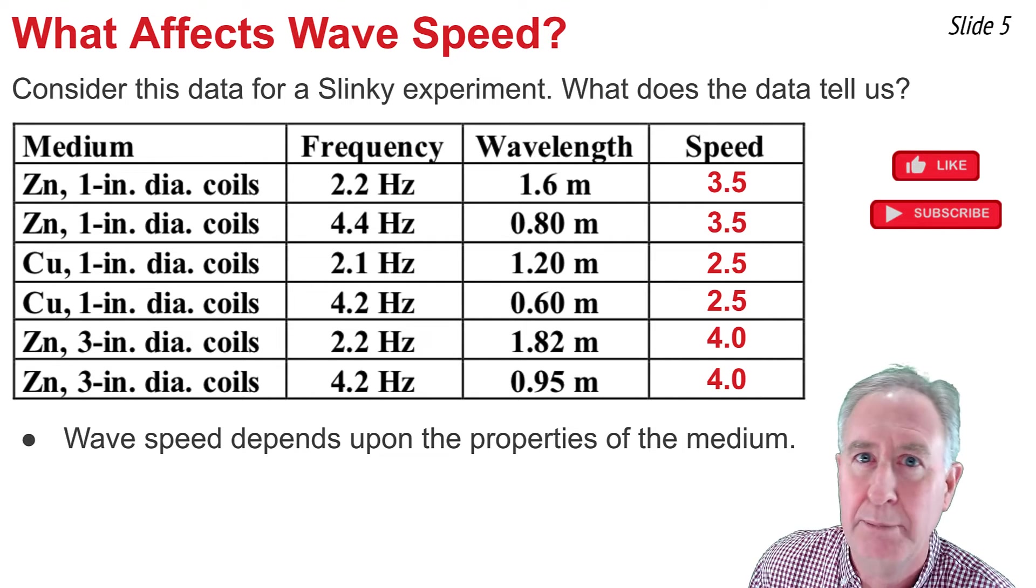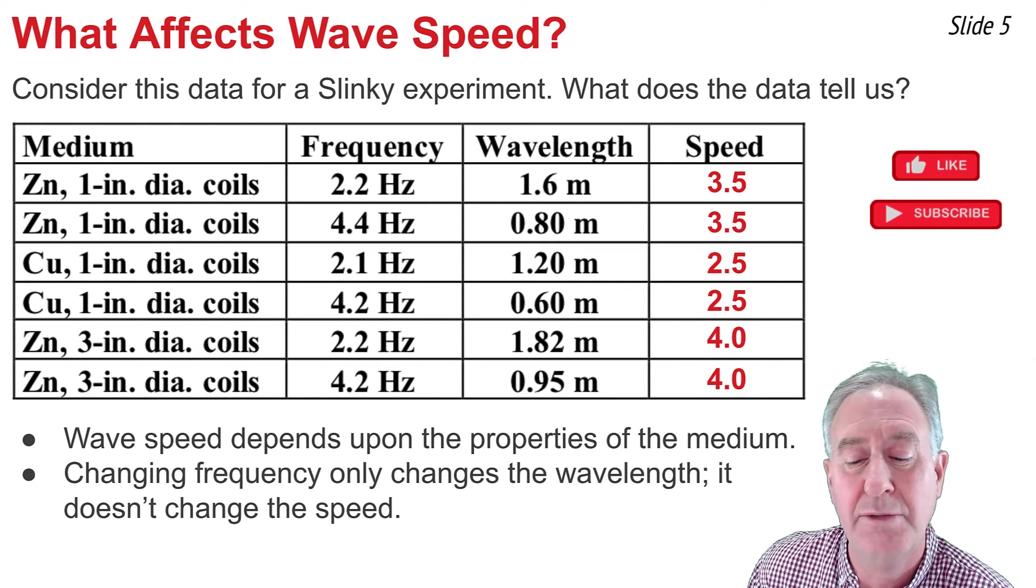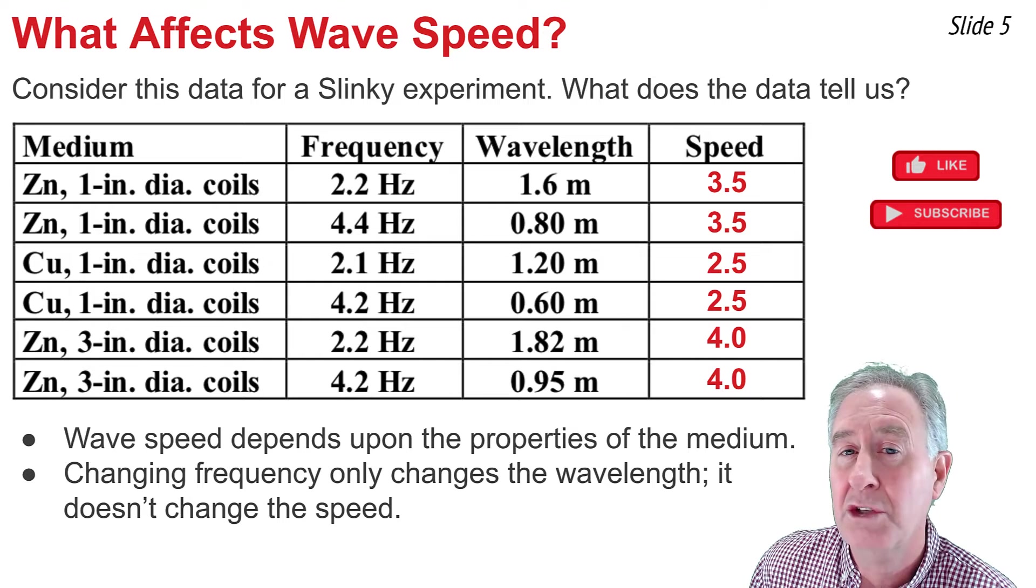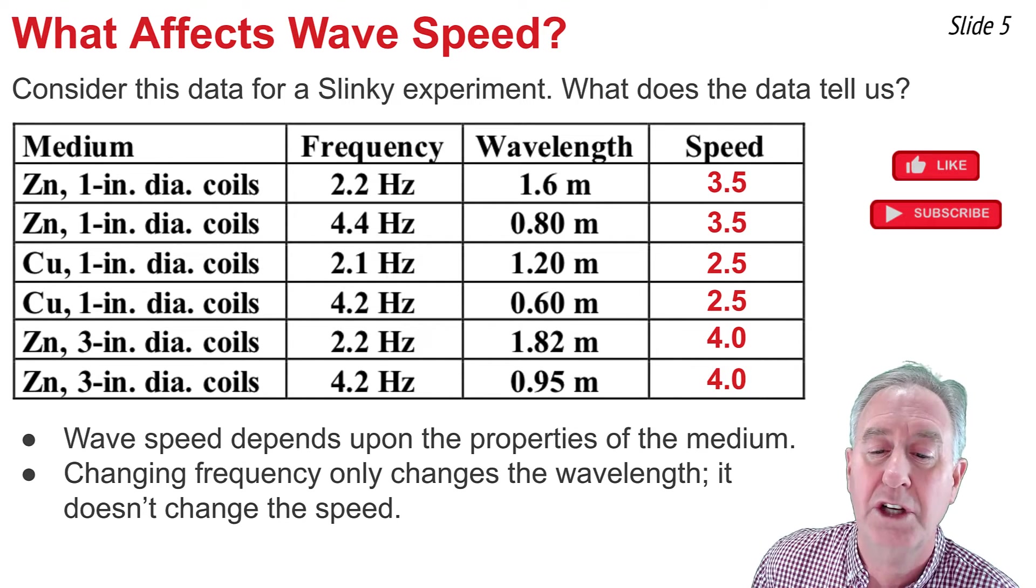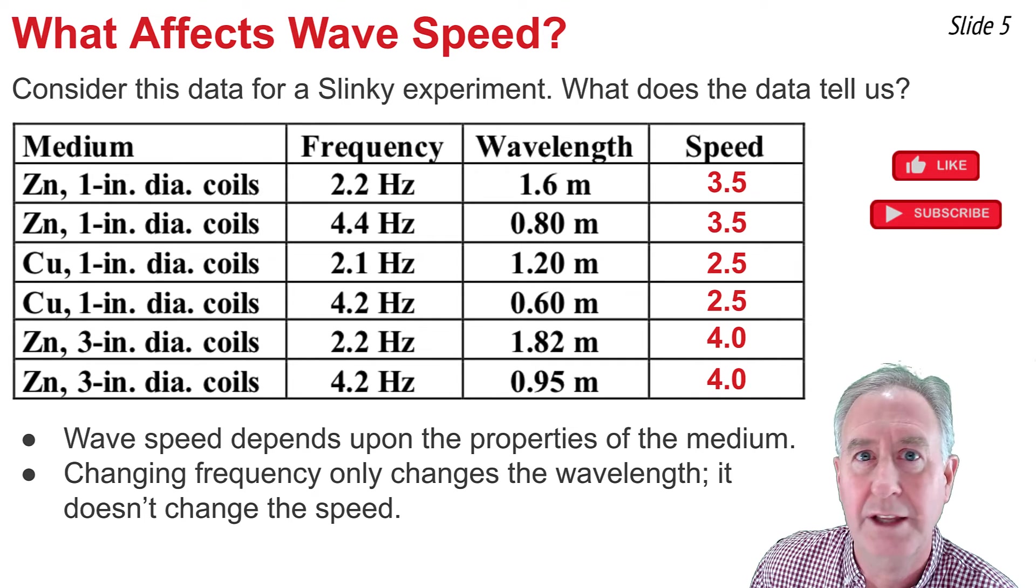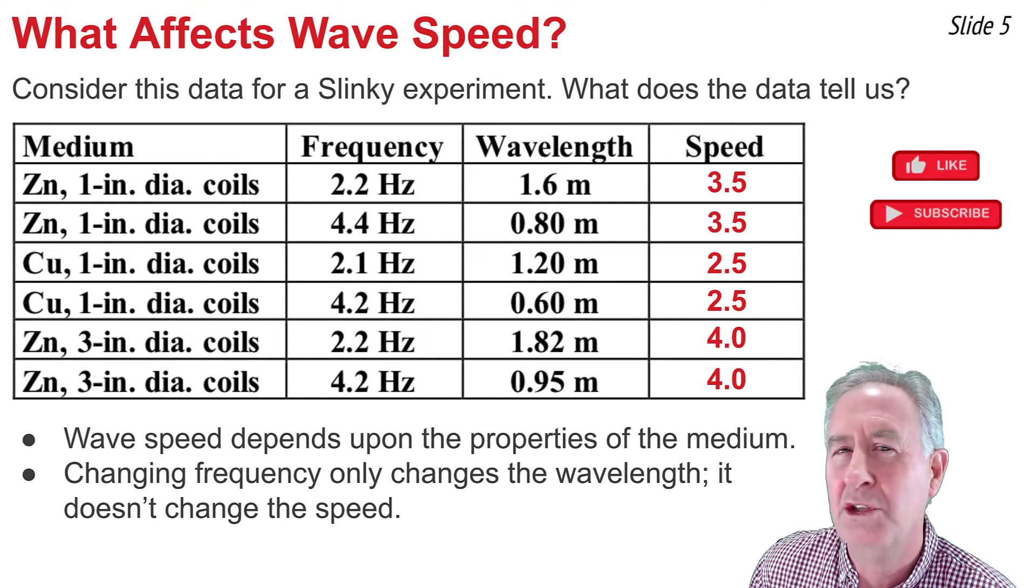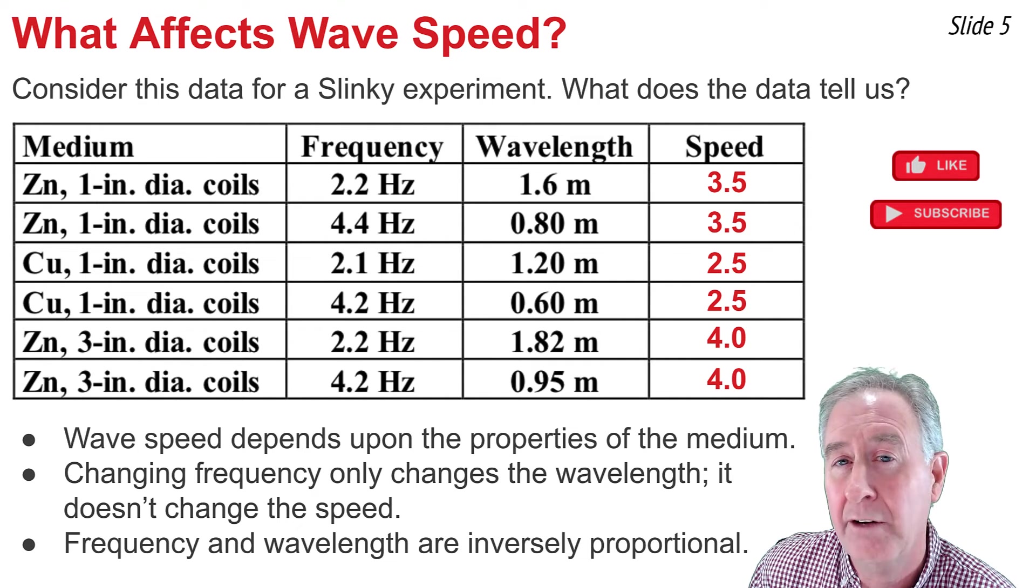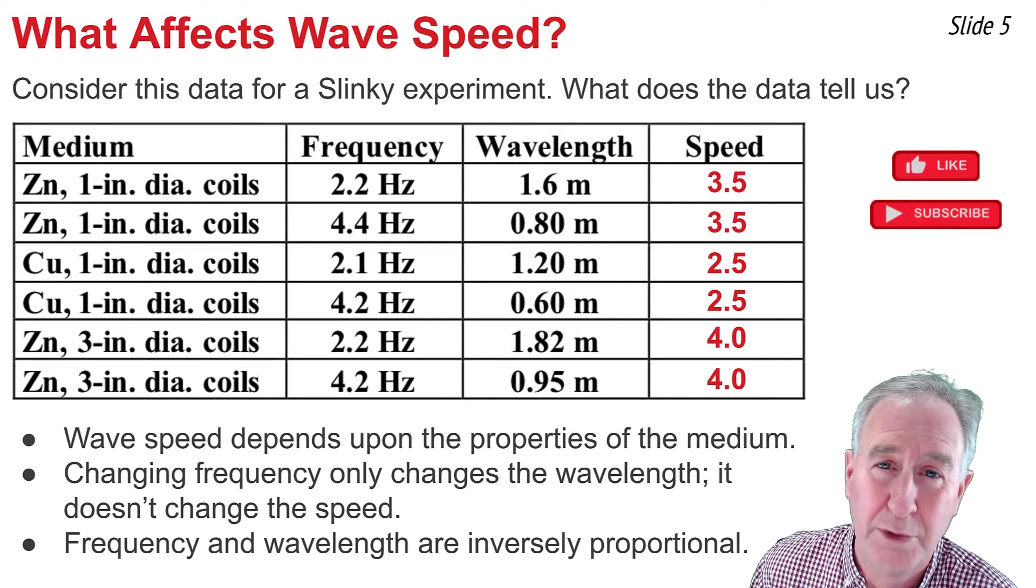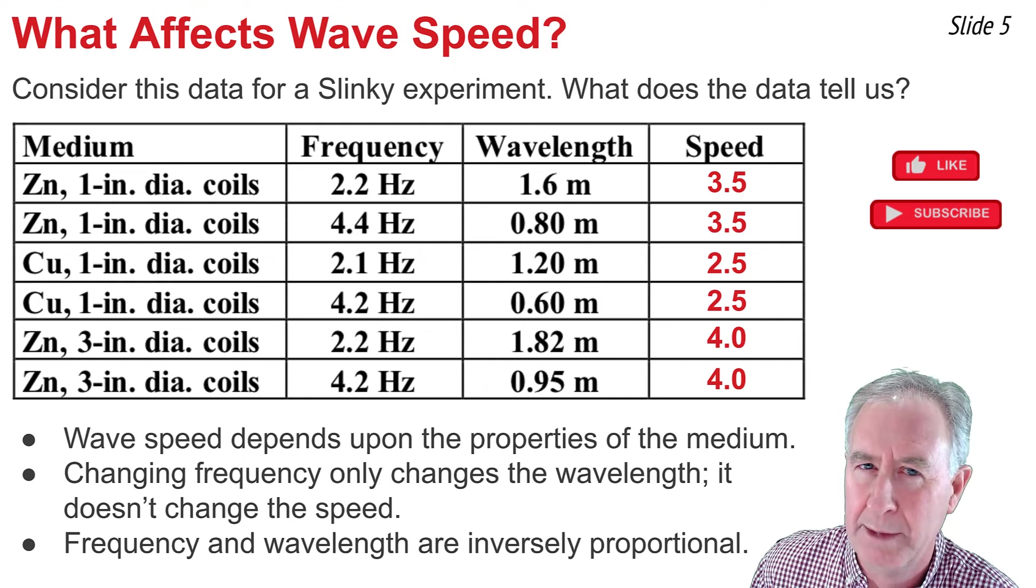It's the medium that determines what the speed value will be, not the values of f and lambda. So we have to say wave speed depends upon the properties of the medium. The second thing we notice is that a change in frequency does not change the speed. It only serves to change the wavelength in the inverse direction. That is, if you look in row 1 and 2, I notice that the frequency doubled, but the wavelength halved, and the speed stayed the same, because the medium was the same. That leads us to the conclusion that the frequency and the wavelength are inversely proportional.